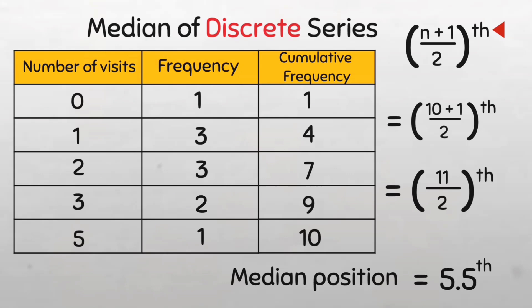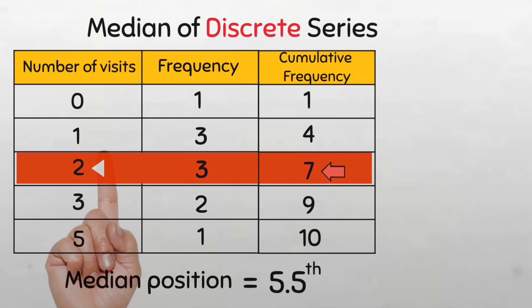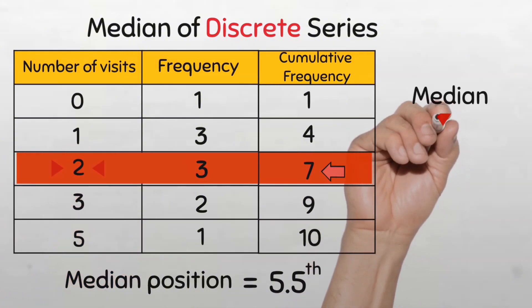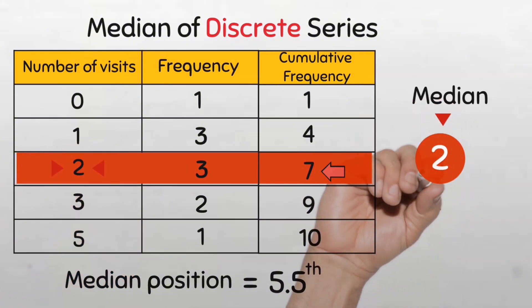The median is going to be at the cumulative frequency value which is just above the median position. So if we look at the cumulative frequency, the one just above the 5.5th position is 7. So we'll trace this back to our original number of visits and we see that our median number of visits is 2 visits. Easy peasy.